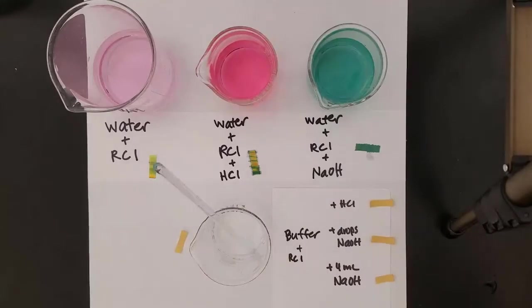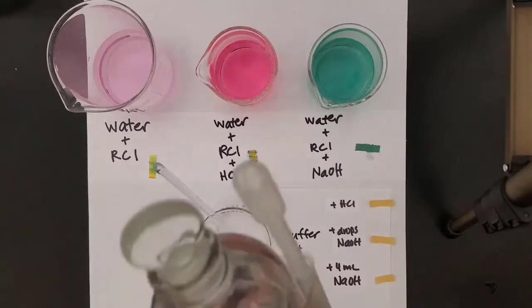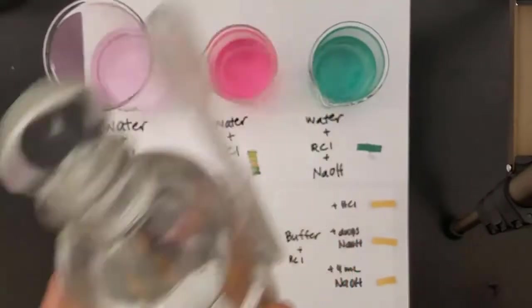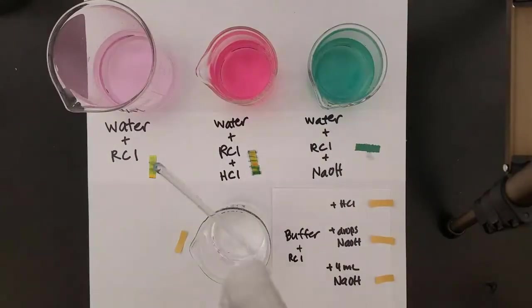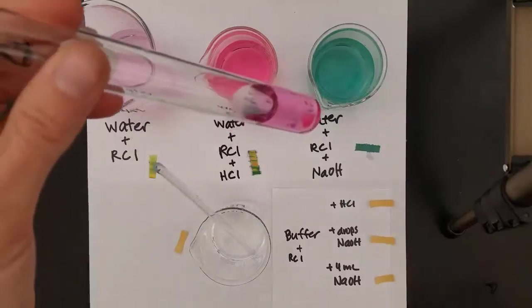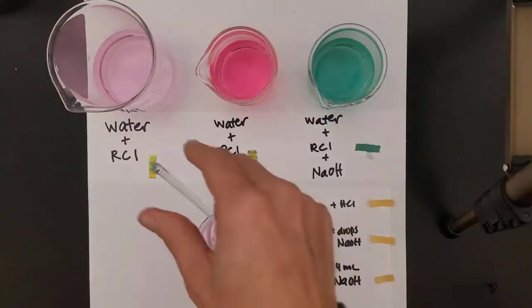So in the buffer, the first ingredient is a weak acid, acetic acid, which is vinegar. It could smell like vinegar if you were in lab. And the second ingredient is a weak base, which is sodium phosphate. The acid is there to neutralize bases. The base is there to neutralize acids.